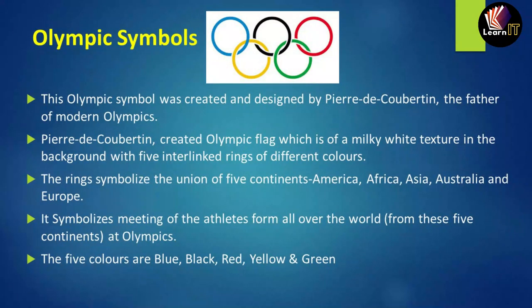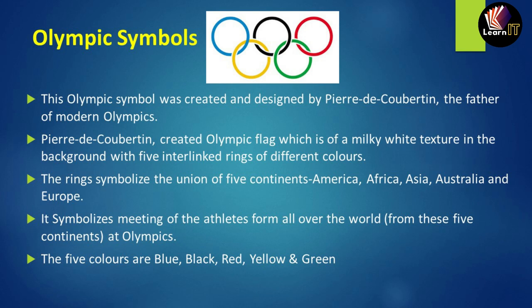Now let us move to the Olympic symbol. It was created and designed by Pierre de Coubertin, the father of modern Olympics. He created the Olympic flag, which has a milky white background with five interlinked rings of different colors. These rings symbolize the union of five continents: America, Africa, Asia, Australia, and Europe. They also symbolize the meeting of athletes from different continents. The five colors are blue, black, red, yellow, and green.